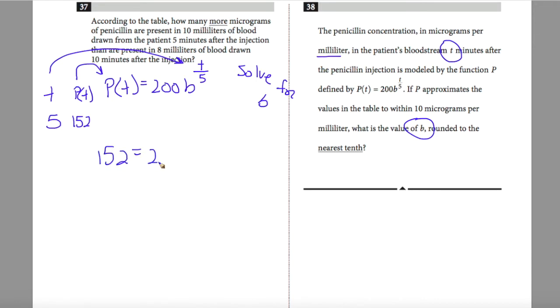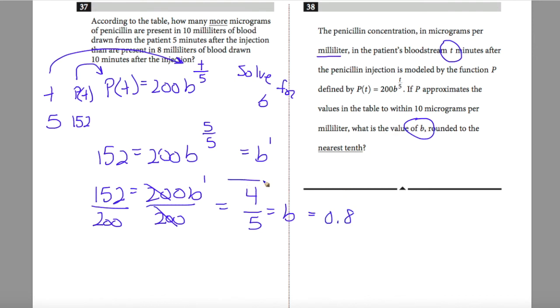So I have 152 equals 200B to the 5 over 5. The reason I did this is because now I have 5 over 5, which is equivalent to B to the first power, which is B. So 152 equals 200B. Divide both sides by 200 in order to isolate and solve for B. And my answer should be four-fifths, or 0.8 if you're rounding to the nearest tenth. So four-fifths or 0.8 should be the best answer for number 38.